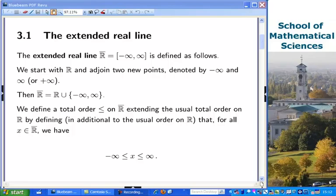Last time, we introduced the extended real line, which was the real line with two extra points, one at minus infinity and one at plus infinity.